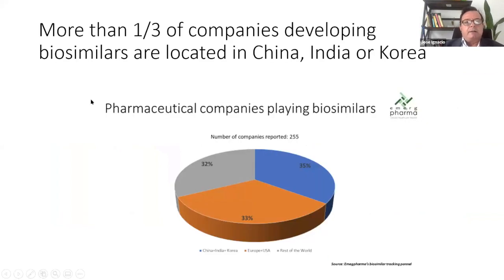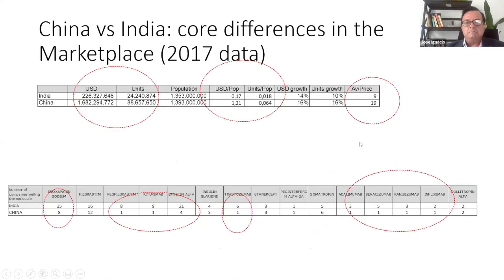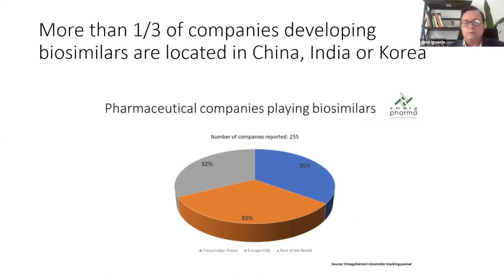Another interesting point is that more than one third of companies developing biosimilars in the world — nearly 35% — come from three Asian markets: China, India, and Korea. This is clearly an opportunity to discuss, as it is an opportunity for that part of the globe to grow and provide products that can help fill the gap, which at the moment is quite important.